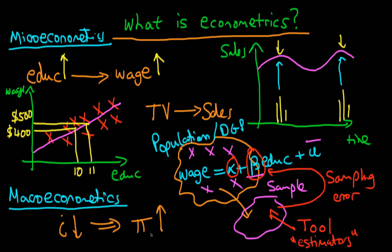In the next video, I want to talk about the difference between econometrics and hard science. In hard science we can actually carry out experiments where we would only increase an individual's level of education holding all other factors constant — in reality we can't actually do that. So econometrics is our way of dealing with non-experimentally generated data. I hope to see you in the next video.